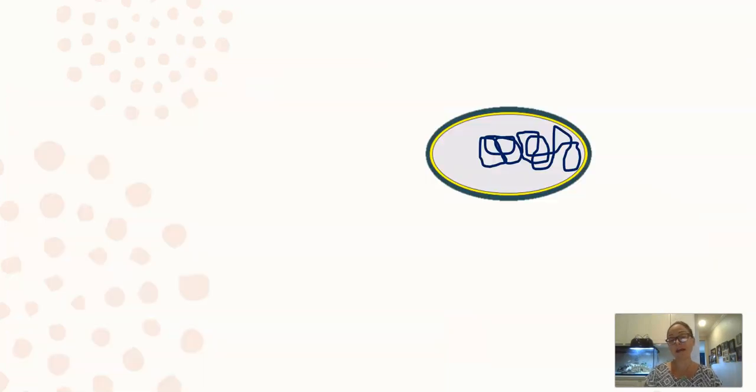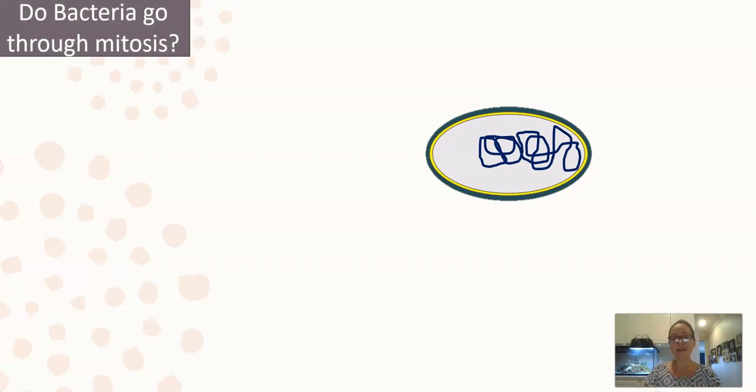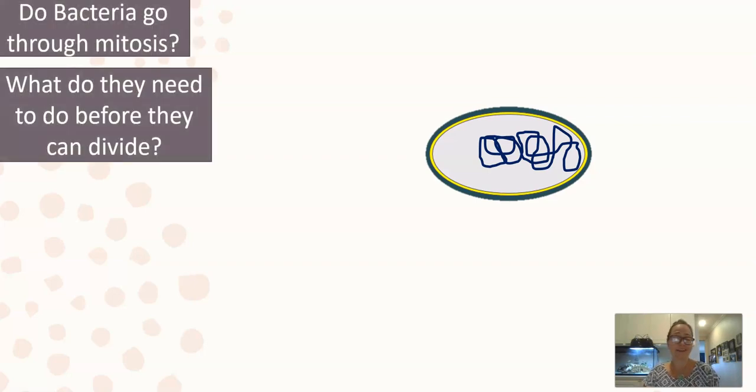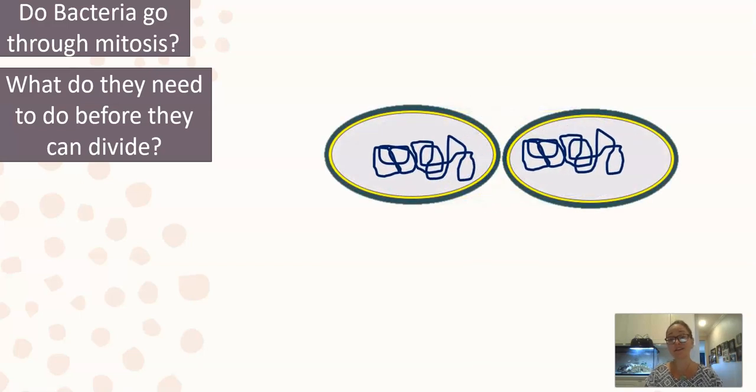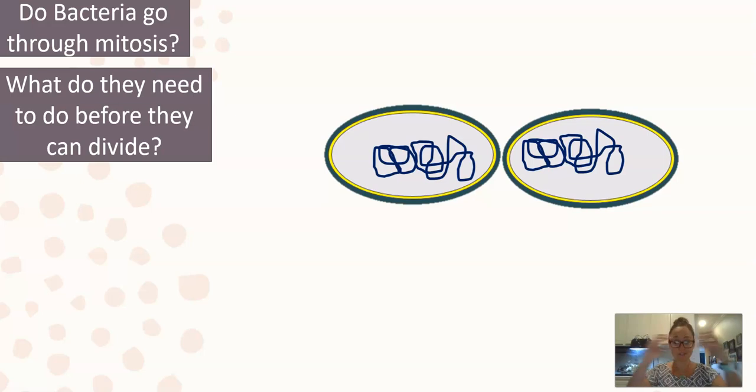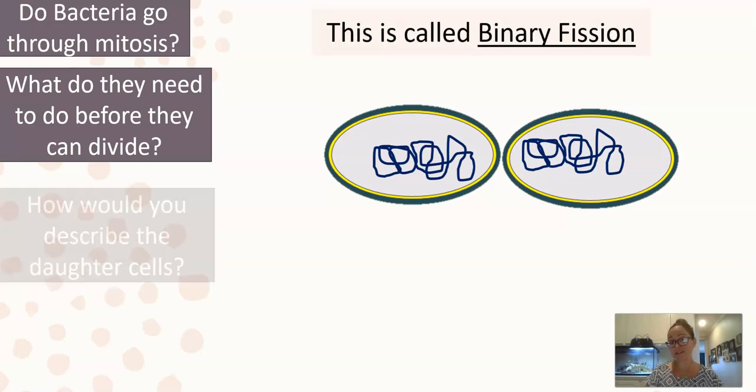So when we look at bacteria and archaeans or prokaryotes, they don't do mitosis because they don't have a nucleus to divide. So instead, bacteria and archaeans or prokaryotes will go through a process called binary fission, where they'll double their main circular chromosome, increase in size, and then eventually divide in half or into two. And so here you have two clones of the original parent cell. So this process is called binary fission.